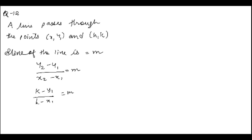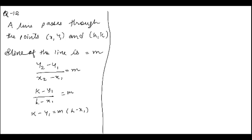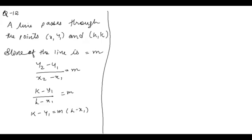If I cross multiply, I will get k minus y1 is equal to m into x minus x1. And this is what we have to show: that k minus y1 is equal to m into (x minus x1).